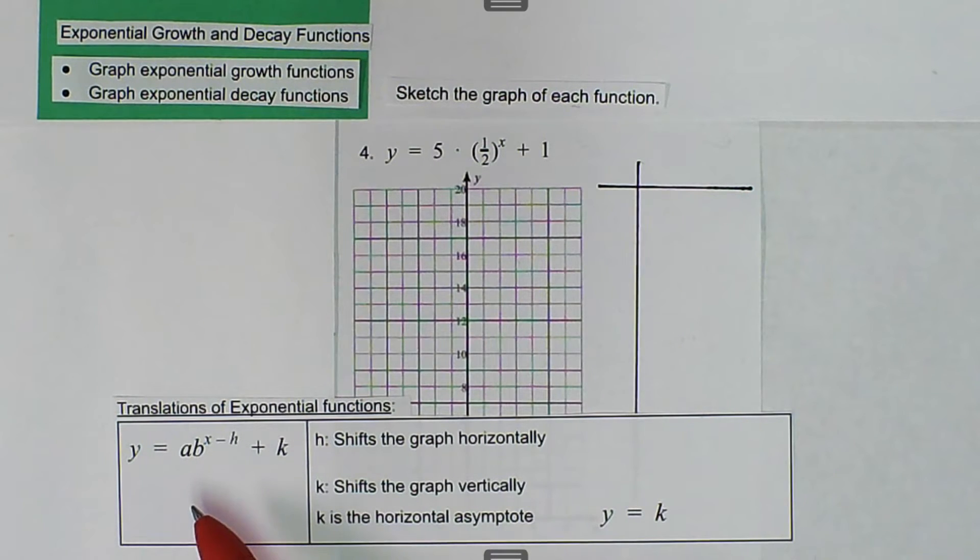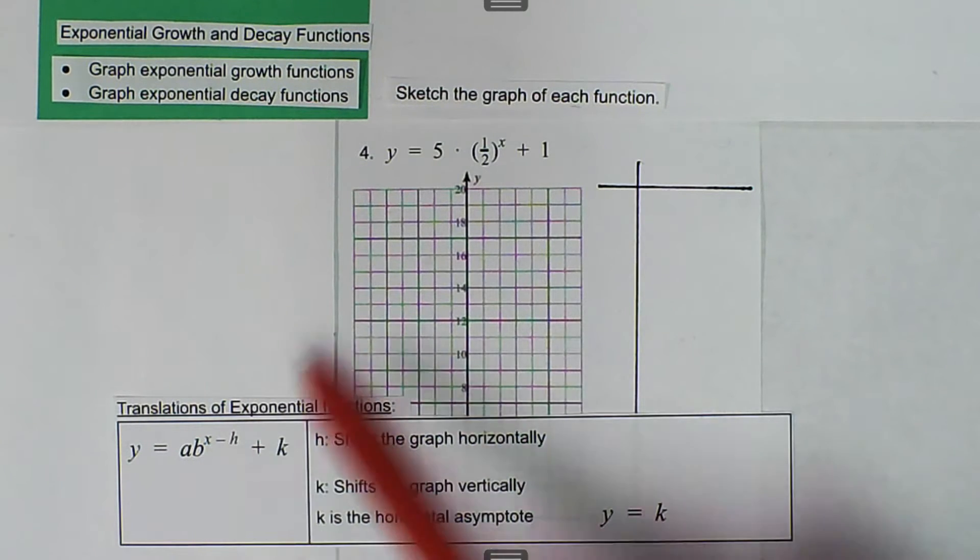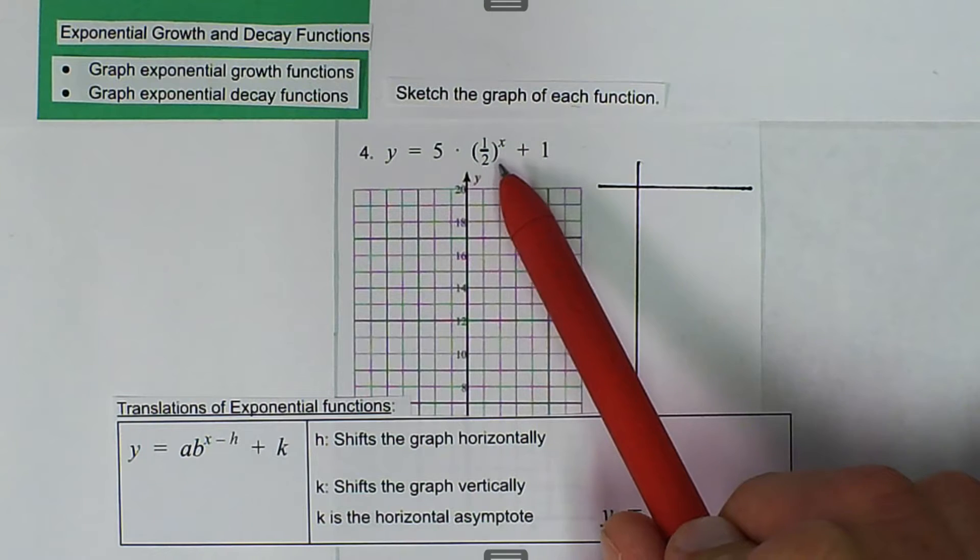So in our formula, we have our a value is 5, our b value is 1 half, so we know that it's going to be exponential decay.